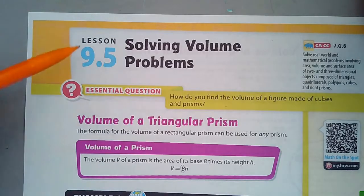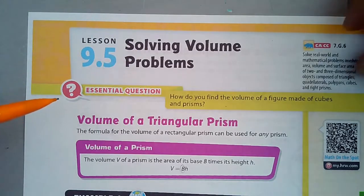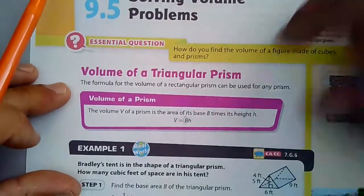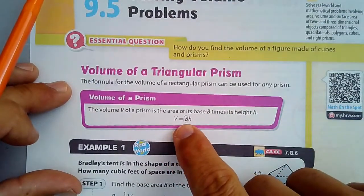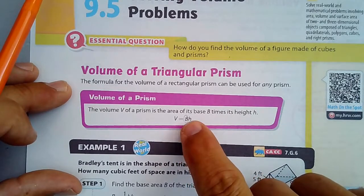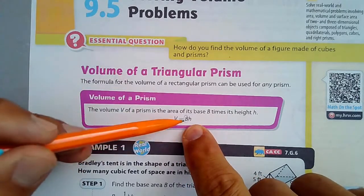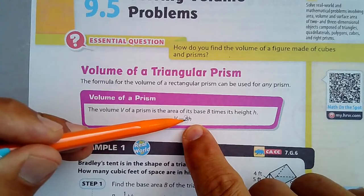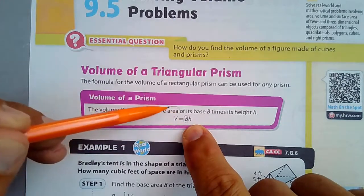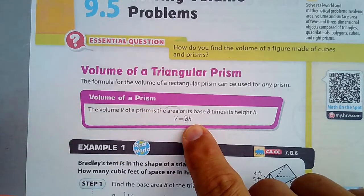Hi, and welcome to Lesson 9.5 on solving volume problems. We start with this formula for the volume of a prism: the base area times the height of the prism. And that B, remember, is the base area, not the length of the base.